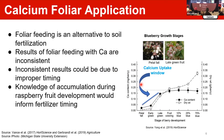About calcium foliar application: foliar feeding is one alternative to soil fertilization. Results for foliar feeding with calcium are inconsistent. This inconsistency could be due to improper timing of calcium application. One paper on blueberry growth stages found the best time for blueberries is between petal fall and late green stage. After that, if you apply calcium, it may not be taken up. Knowledge of calcium accumulation during raspberry fruit development will inform the best timing for calcium application.